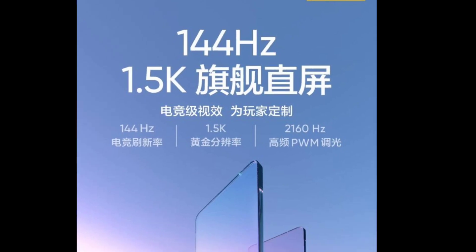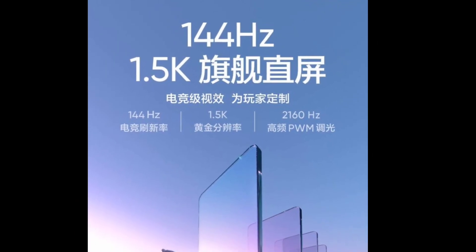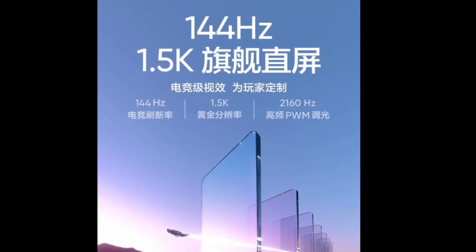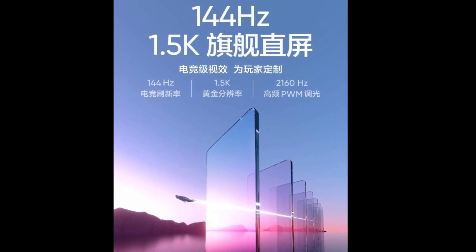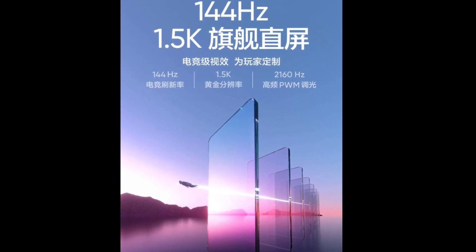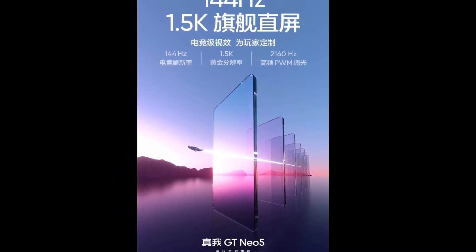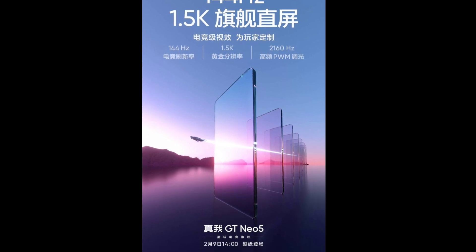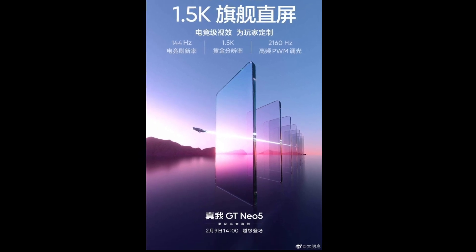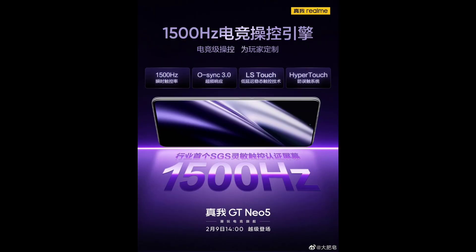Regarding the Realme GT Neo 5, the first thing is the refresh rate — there will be a 144Hz refresh rate and a 1.5K resolution display, which is a slight upgrade when you compare with the previous one. And there will be a 1500Hz touch sampling rate, which is the highest touch sampling rate any smartphone has got till now.